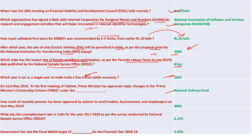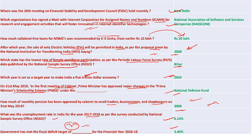In the first cabinet meeting, the Prime Minister approved major changes to the PM Scholarship Scheme under the National Defense Fund. 3,000 rupees is the monthly pension approved for small traders, businessmen, and shopkeepers under unorganized sector schemes. The unemployment rate in India for 2017-18 as per the National Sample Survey Organization was 6.1%. 3.4% was the fiscal deficit target which was met by the government through reduced spending in the last quarter.